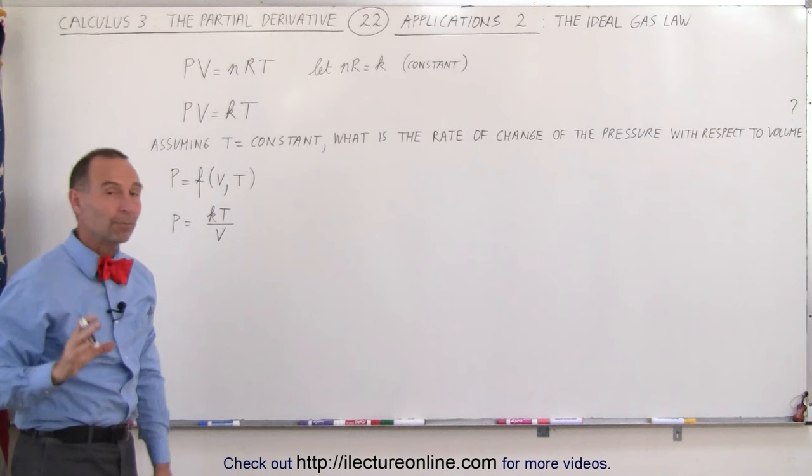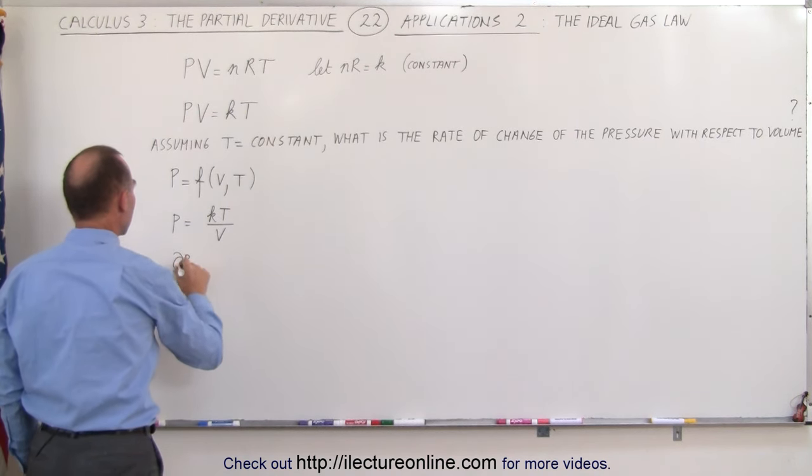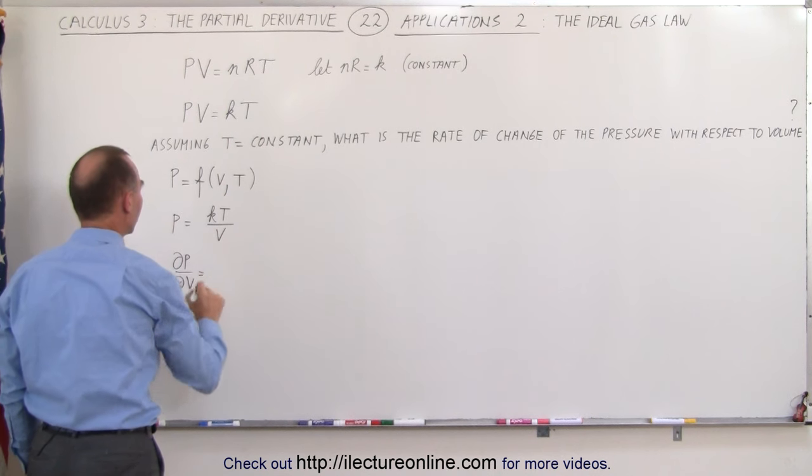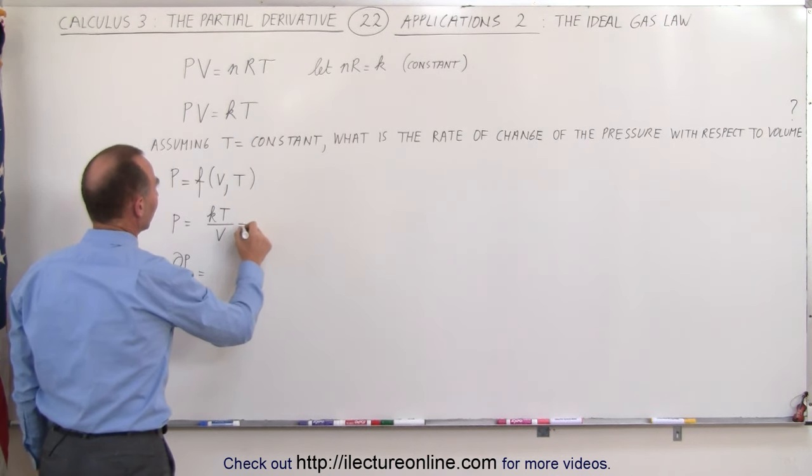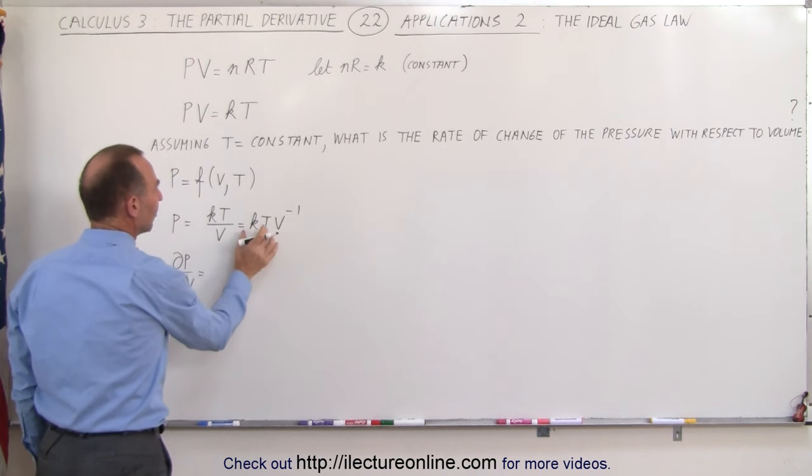Now we're going to take the partial derivative of that function with respect to the volume. The partial of P with respect to V is equal to... Well, if you think of this as equal to KT times V to the minus 1, since K and T are now constants,